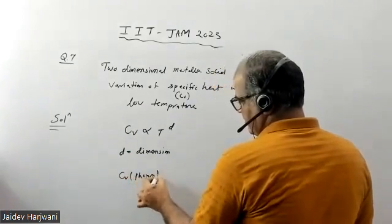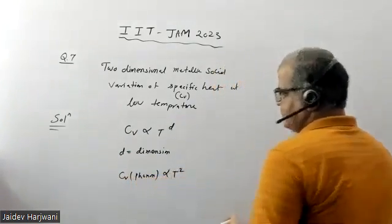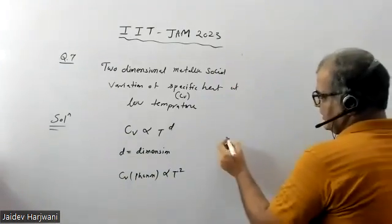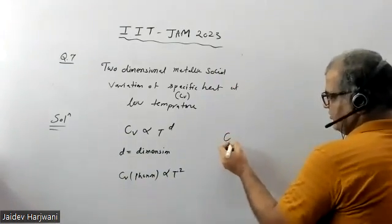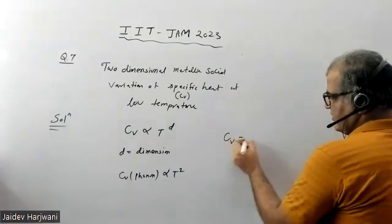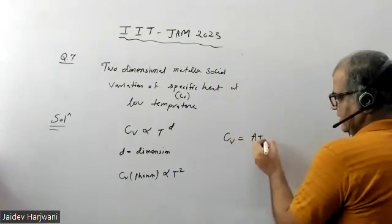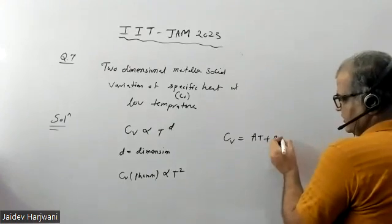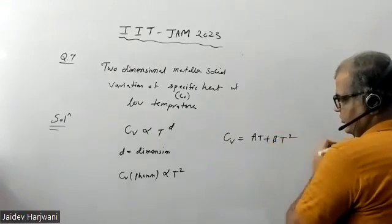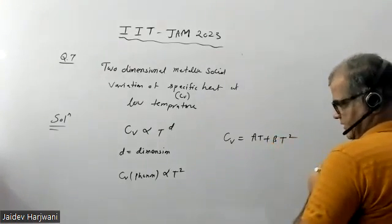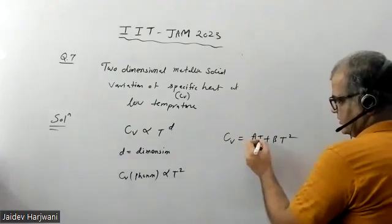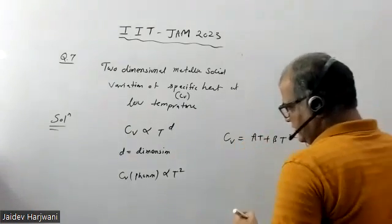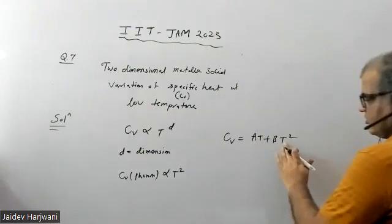For a metal, the specific heat CV is given by AT plus BT squared for a two-dimensional solid — the T term is due to electrons (electronic specific heat) and the T squared term is the phonon specific heat.